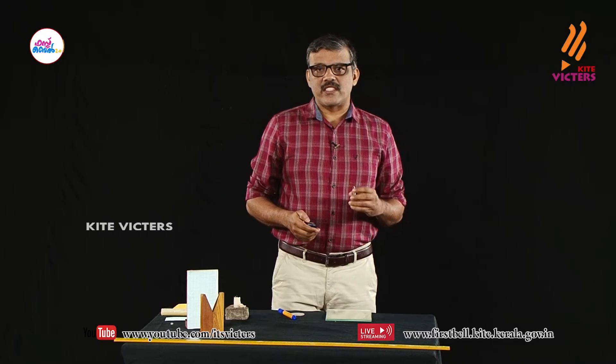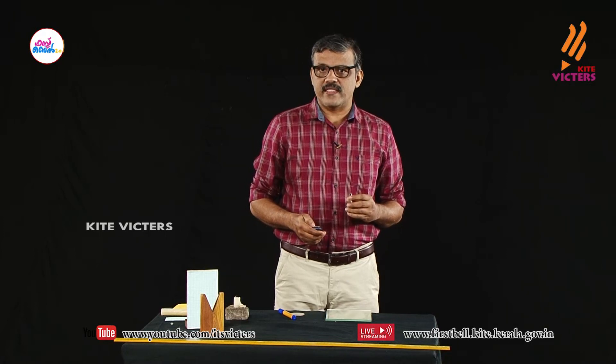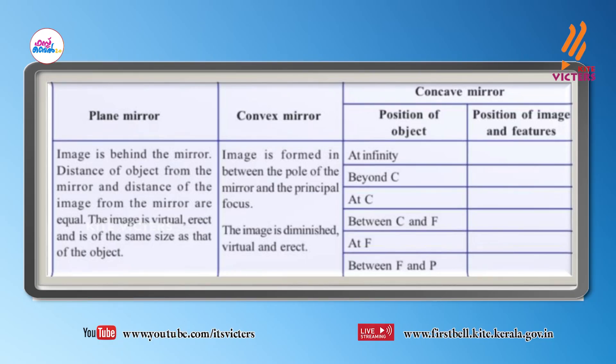Based on the above discussion, we can summarize this in a table, which you can complete as an assignment. There are three columns: the first is for plane mirror, the second for convex mirror, and the third for concave mirror. The object positions are: at infinity, beyond C, at C, between C and F, at F, and between F and P.